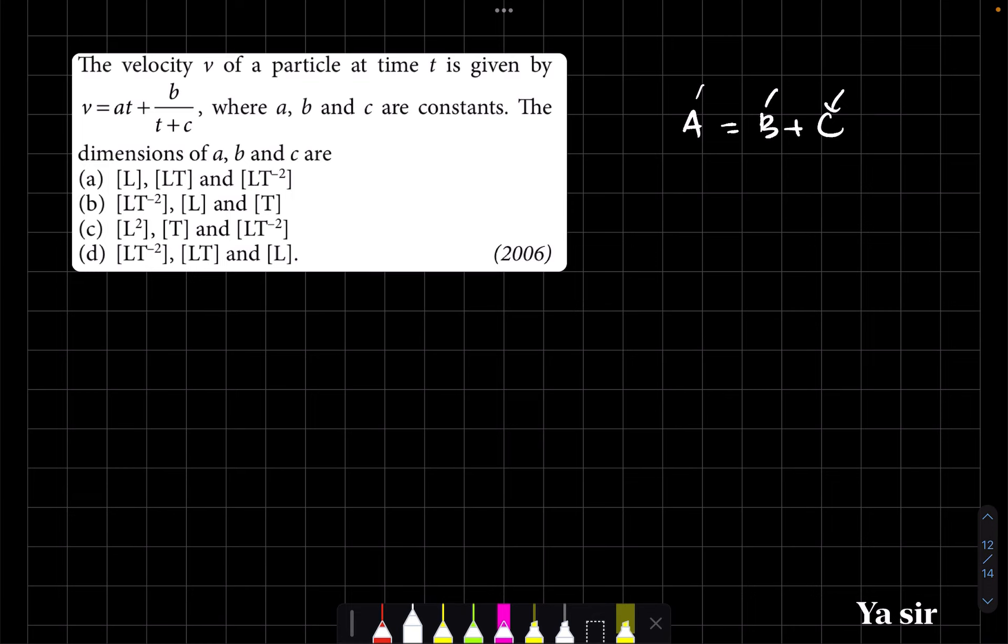So here one thing is very clear: here t plus c is there. So what is the dimensional formula of c? It should be T. Otherwise you cannot add with time.